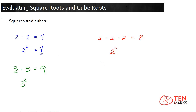Another example: if you did 3 times 3 times 3, this equals 27, and this is your cube. To rewrite this as an exponent, you get 3 raised to the third, or 3 cubed.